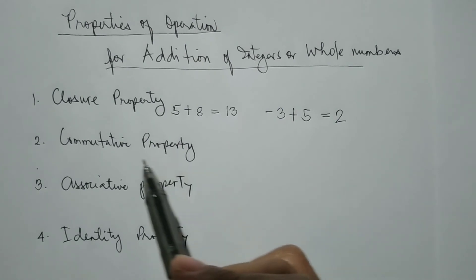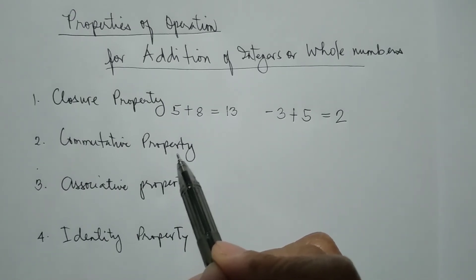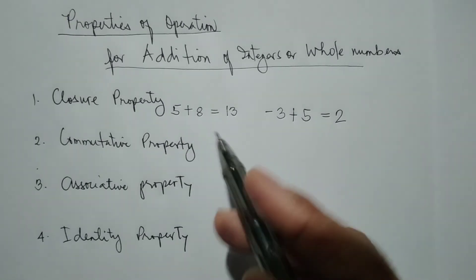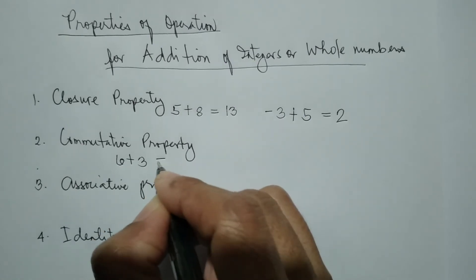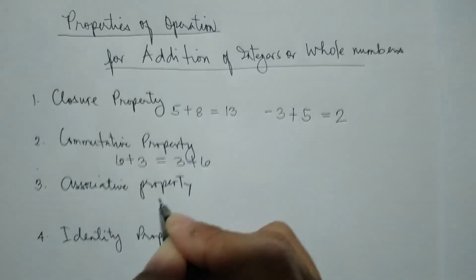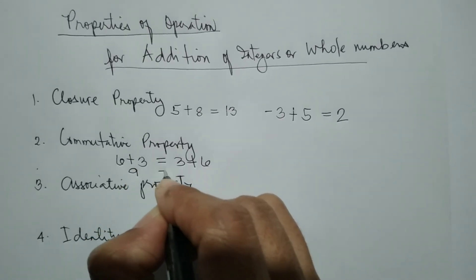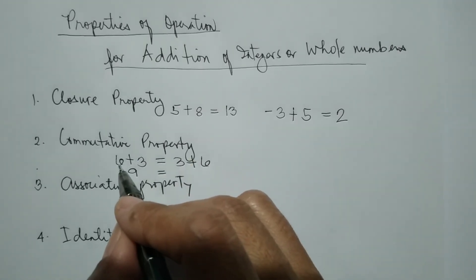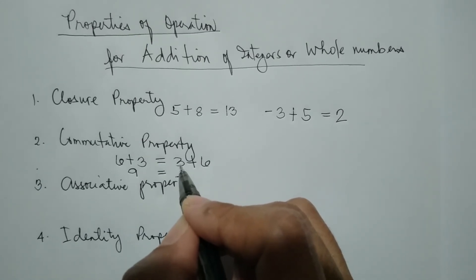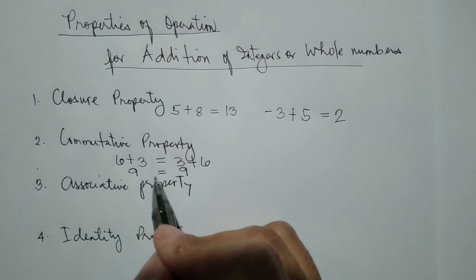The second property is the commutative property. It means that no matter what the order of our addends is, the sum is still equal. For example, 6 plus 3 is still equal to 3 plus 6. If we have 6 plus 3, it gives us 9, which is also equal to 3 plus 6, which gives us 9. That's what we mean by commutative property.